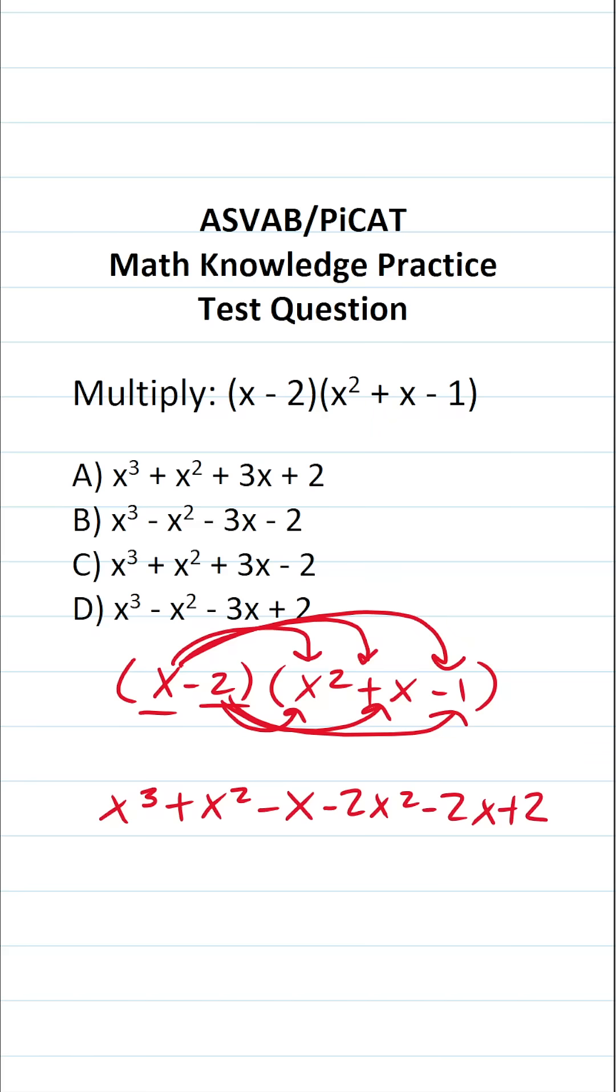Now, this isn't an answer choice because we can go through this expression and combine like terms. x to the third power doesn't have a corresponding like term, so we'll just copy it down as is. That said, we have x squared and negative 2x squared. x squared minus 2x squared is just going to be negative x squared. Now that I've combined them, I'm going to cross them out.